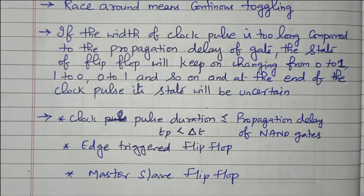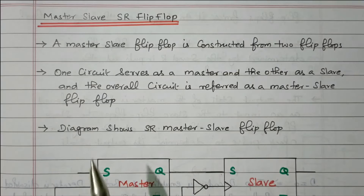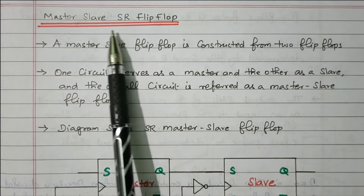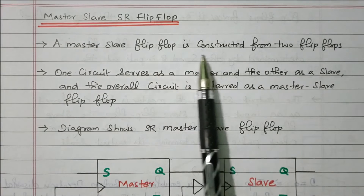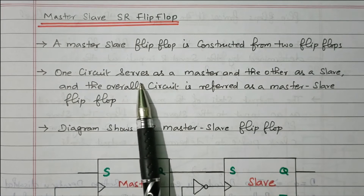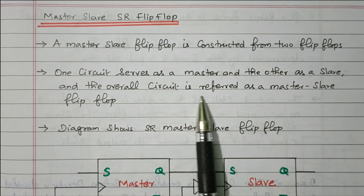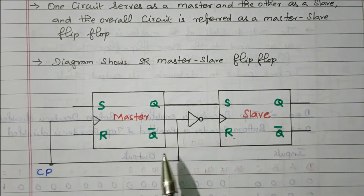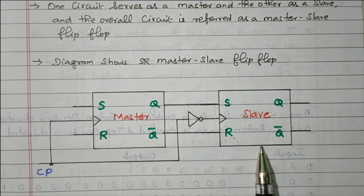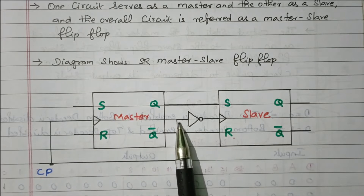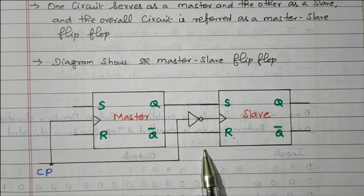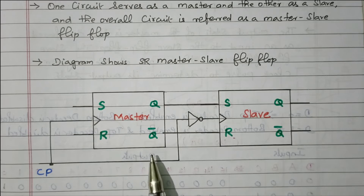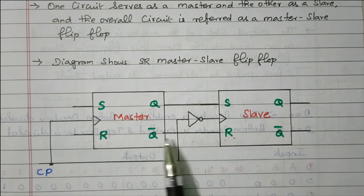Now we will see the master-slave SR flip-flop. A master-slave flip-flop is constructed from two flip-flops. One circuit acts as a master and another acts as a slave, and the overall circuit is referred to as a master-slave flip-flop. The first SR flip-flop acts as master, the second acts as slave. The clock pulse is given to the first flip-flop; an inverted clock pulse is given to the second flip-flop. This ensures the race around condition does not exist between master and slave — that is our main objective. Two flip-flops are connected in series with an inverted clock pulse.